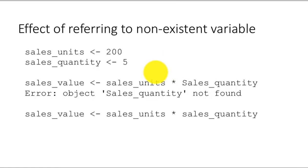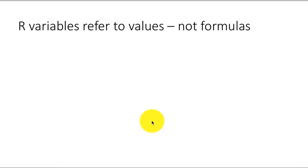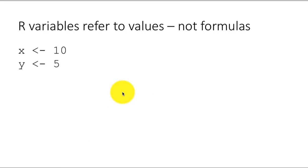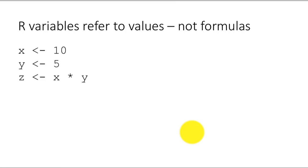Since many people watching this video have already used R, they understand something, but I just want to reiterate. R variables refer to values — they do not refer to formulas. Here I'm making an explicit distinction between R and Excel, because many people coming to R are coming from an Excel background. So suppose we say x is assigned the value 10, y is assigned the value 5, and then z is assigned the value of x multiplied by y. So z will get the value 50. Remember, z now contains the value 50 — z is not keeping the formula x times y.